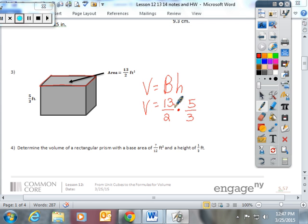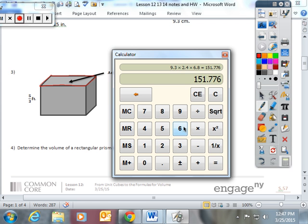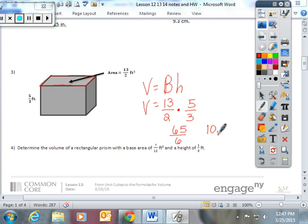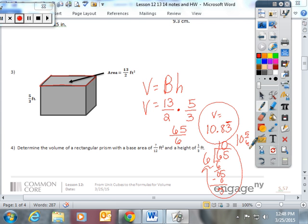Is thirteen over two times five thirds. And again, I'm going to do top times top, bottom times bottom. So this volume, sixty-five divided by six, is going to give you a volume of ten point eight three with bar notation over the three because it's a repeating decimal. But I'm also going to show you how to change it into a mixed number. Sixty-five divided by six. Six goes into six once. Six goes into five zero times. So it's ten and five sixths would be an equivalent way to write that volume.